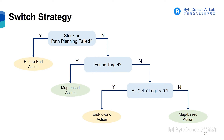Our switch strategy is simple. We will use the end-to-end action in three situations. The first is that the agent is stuck or cannot find a possible path. The second is that the agent hasn't found the target object. The third is that all cell logits are less than zero, meaning there is no potential target or related object on the map. Otherwise, we use the action from the map-based method.